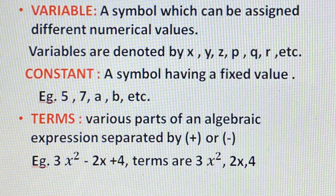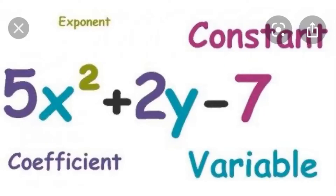Let us see another example to understand more clearly. Consider the algebraic expression 5x² + 2y − 7. It is an algebraic expression in which the terms are connected by addition and subtraction. There are three terms: 5x², 2y, and 7. The term 7 is a constant — its value is fixed. Now, how many variables are there here?